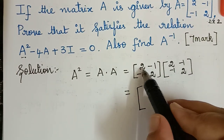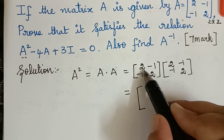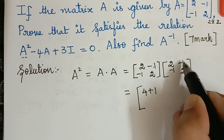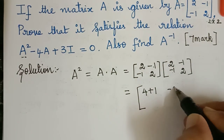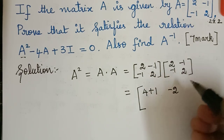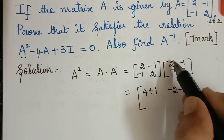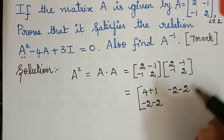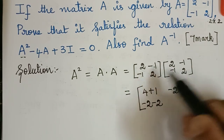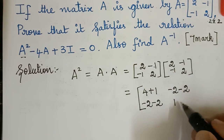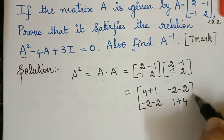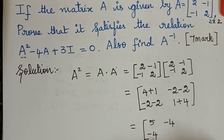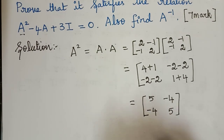Multiplying first row by first column: 2×2 = 4, and (-1)×(-1) = +1, giving 5. First row, second column: 2×(-1) = -2, and (-1)×2 = -2, giving -4. Second row, first column: (-1)×2 = -2, and 2×(-1) = -2, giving -4. Second row, second column: (-1)×(-1) = 1, and 2×2 = 4, giving 5. Therefore A squared equals [5, -4; -4, 5].